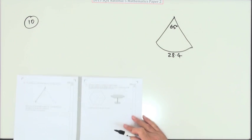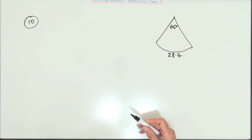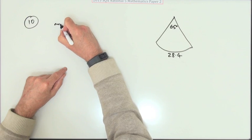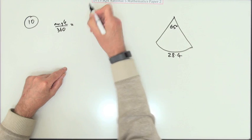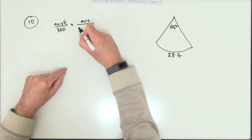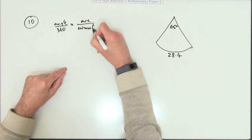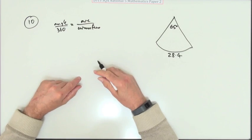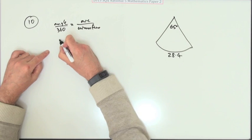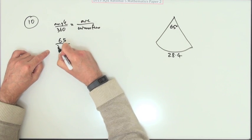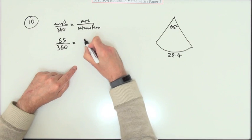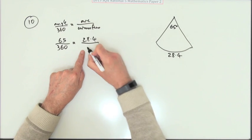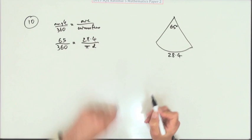Well, just set out the fractions that you know. The angle over 360 is the same fraction as the arc over the circumference, which would be the same as the area of the sector over the whole circle, but we're not using that part. So filling that out, you've got 65 out of 360 is the same as 28.4 over the circumference, which you call pi d.